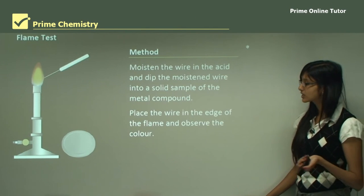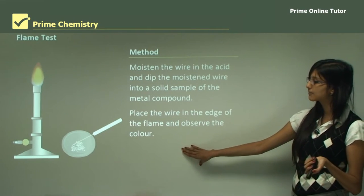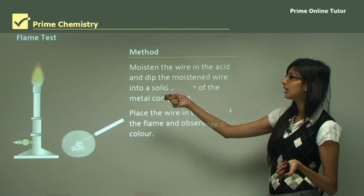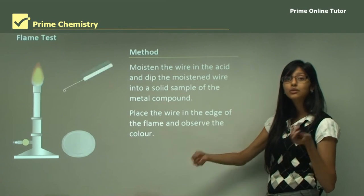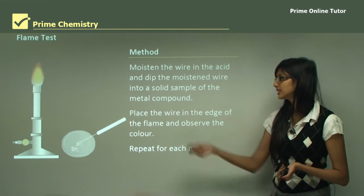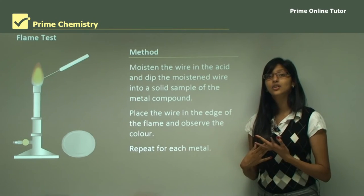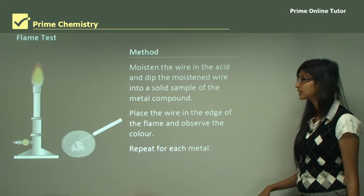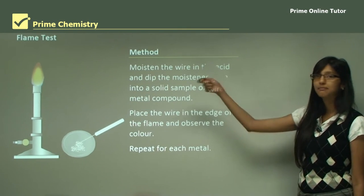Make sure the wire is placed at the edge of the flame, not in the middle, as shown in the animation, and observe the color change. When you put the metal compound into the Bunsen burner flame, the color of the flame should change, indicating which metal cation is present. Do this for every single metal, using different wires or cleaning the wire between each test to avoid contamination.